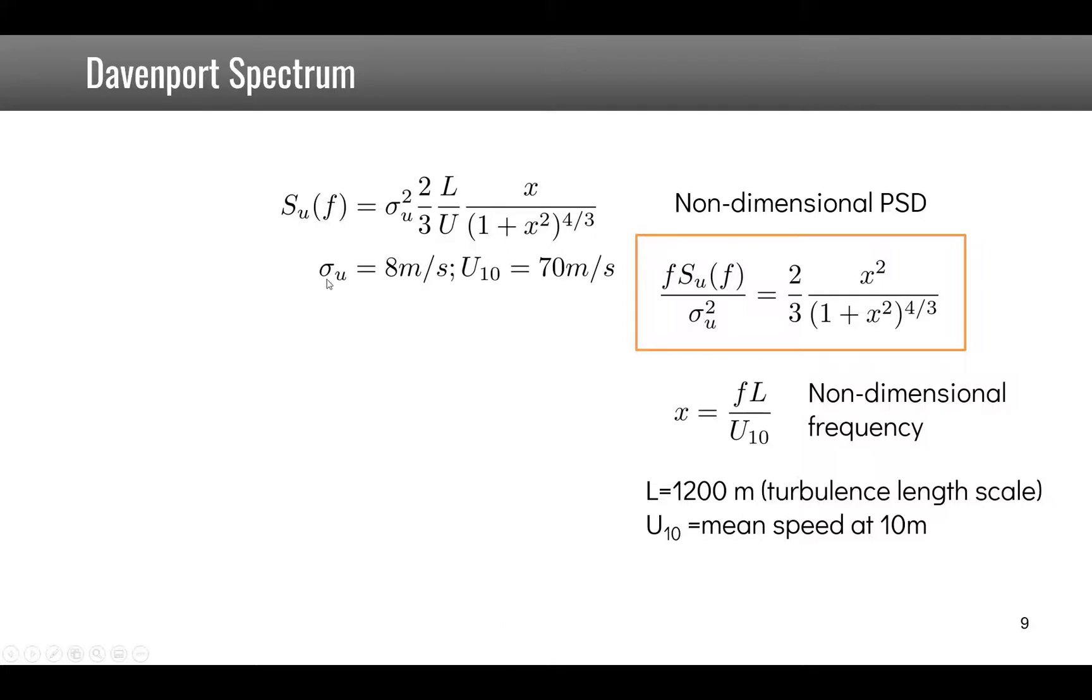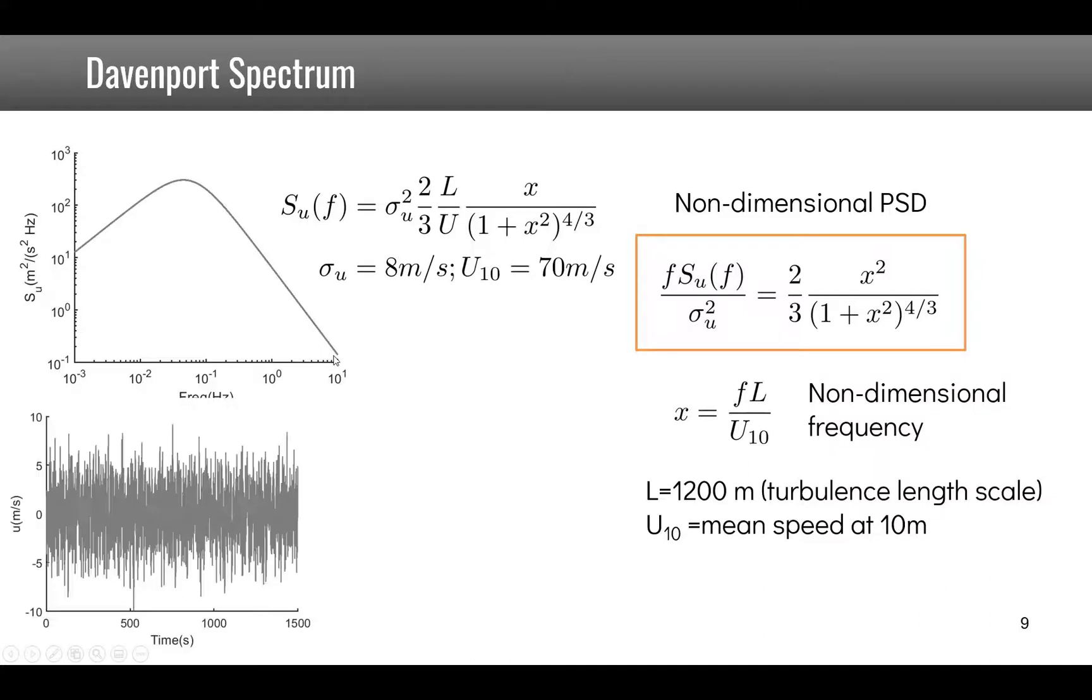Taking, for example, sigma u is 8 meters per second and U10 is 70 meters per second, we find that the power spectral density is given by this curve. From this power spectral density, we can extract a time domain signal of this wind velocity, which is a random turbulent signal.